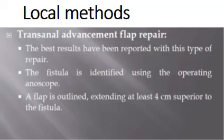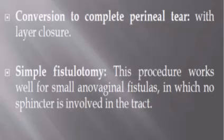Local surgical methods include the transanal advancement flap repair. The best results have been reported with this type of repair. The fistula is identified using the operating anoscope, and a flap is outlined extending at least 4 cm superior to the fistula. Additional local methods include conversion to complete perineal tear with layered closure, or simple fistulotomy.